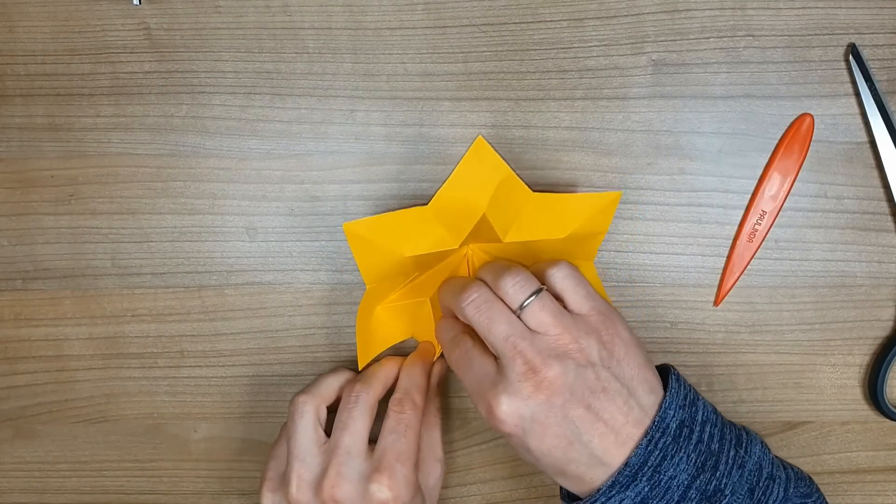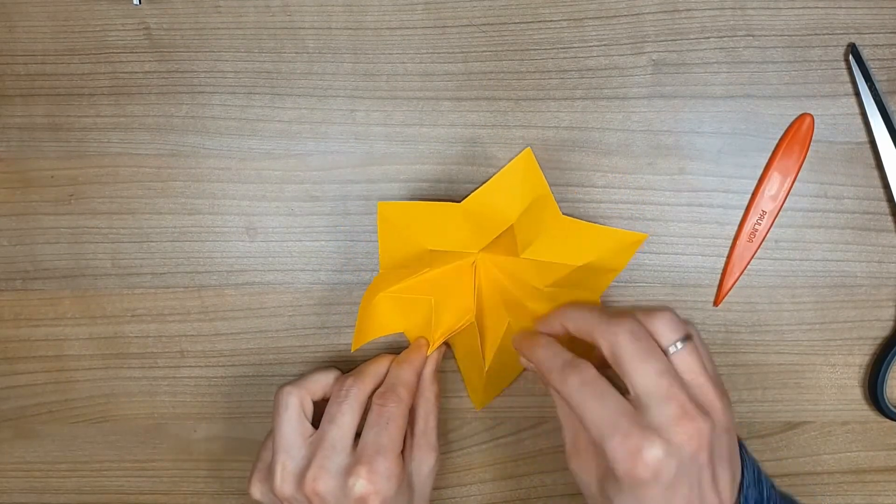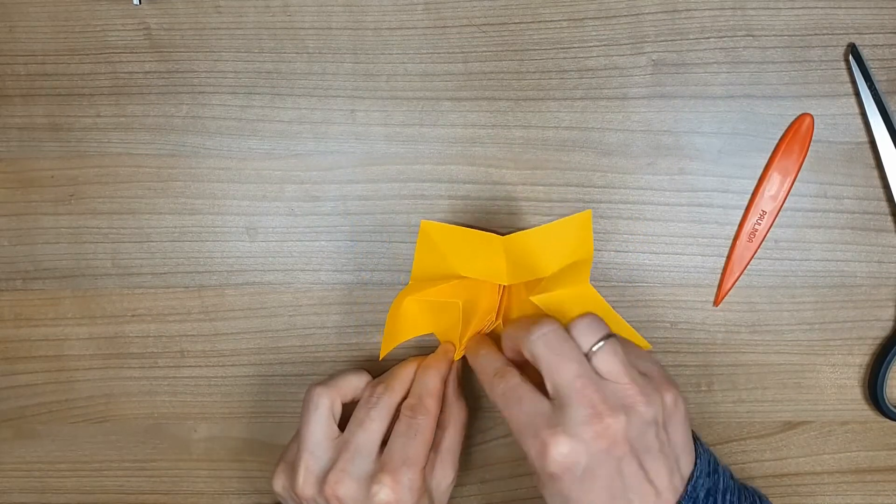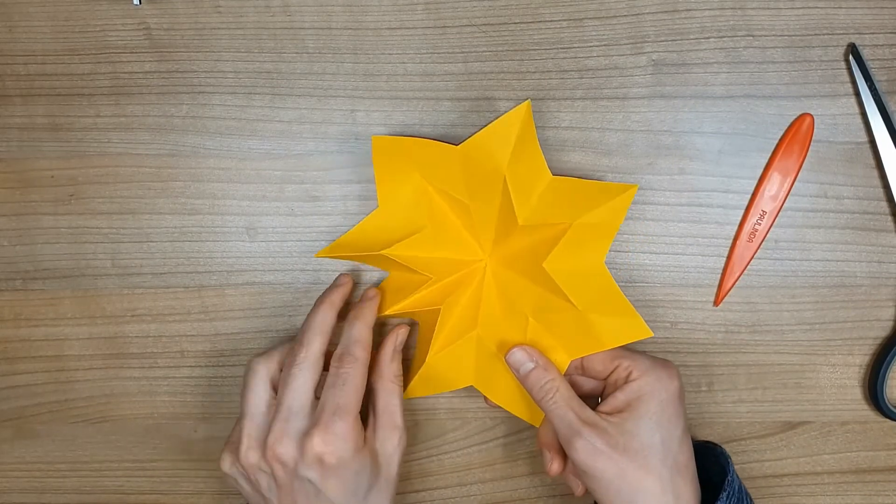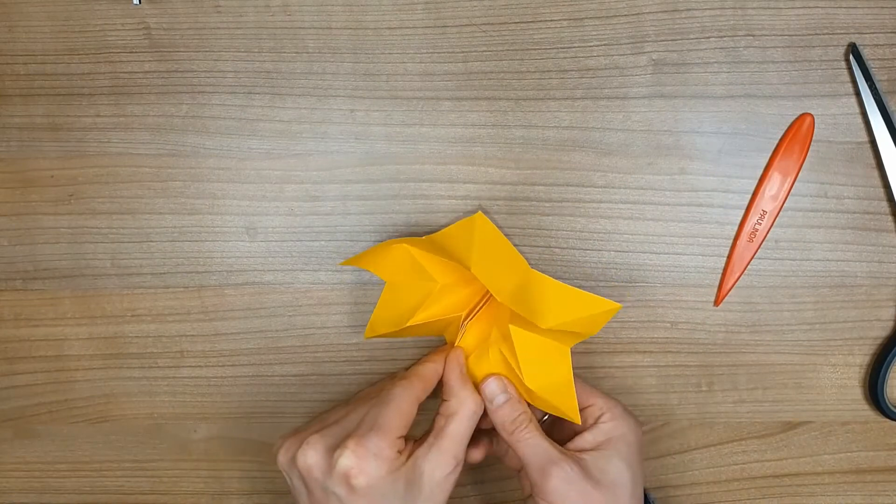Once you have one or two points done, you can take the folds of the point of the star next to it together to make a good fold and continue to do so for all the points.